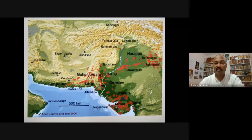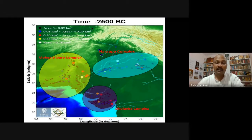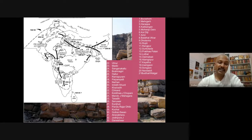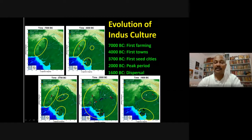We can see maps showing the northern part of India — Harappa, Mohenjo-daro, Dholavira, and Lothal — and the broader Indian subcontinent. Settlement patterns of Mohenjo-daro, Harappa, and Dholavira complexes show mature phase development. There are also sites in all of India during the Neolithic age, showing civilizations developing from southern to northern and eastern to western India. The evolution of Indus culture: 7000 BC first farming, 4000 BC first towns, 3700 BC first sealed cities, 2000 BC peak period.